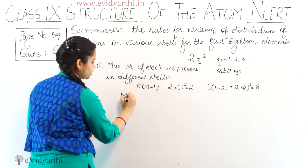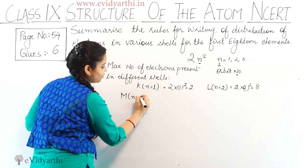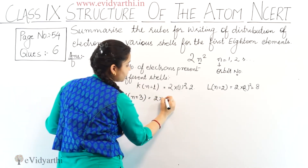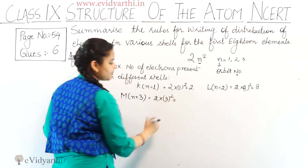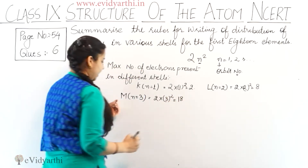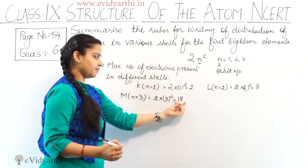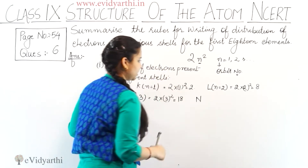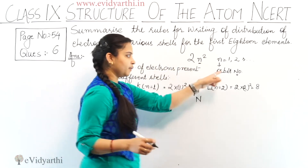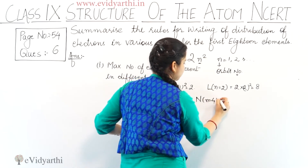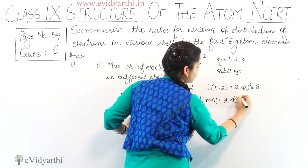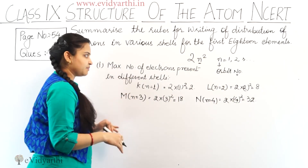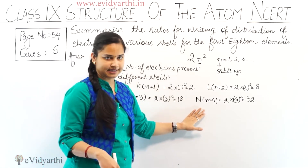Coming to the M shell, n is equal to 3. So it is 2 × 3² = 18. The maximum number of electrons that should be present inside the M shell is 18. Coming to the N shell, the orbit number value is 4. So it is 2 × 4² = 32. I have now told you the maximum electrons present in the different shells.